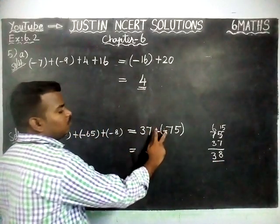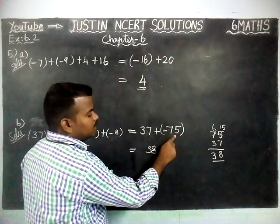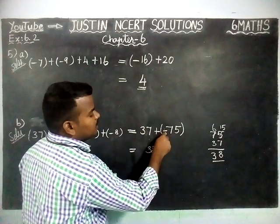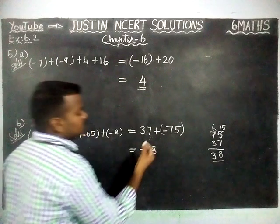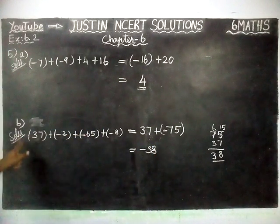And here, forget about the signs. 75 is the greatest number. In front of greatest number, minus sign is there. So, minus 38 is the correct answer for part B.